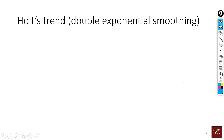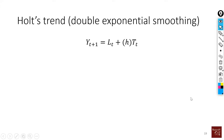We are going to look into the Holt's trend method, which is also known as double exponential smoothing, because here we will use two exponential smoothing parameters.